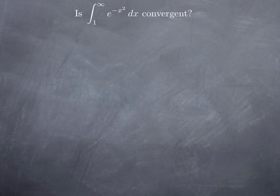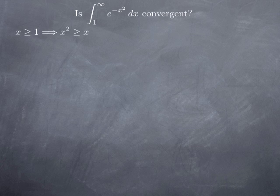So what to do then? Well, one thing we can do is compare the function with another one for which we can do the calculations. Since we are integrating from 1 to infinity, x is greater than 1, and that means x squared is greater than or equal to x. Therefore, multiplying by negative 1, negative x is greater than or equal to negative x squared. Since the exponential function is increasing, it preserves inequalities, so e to the negative x is greater than or equal to e to the negative x squared.